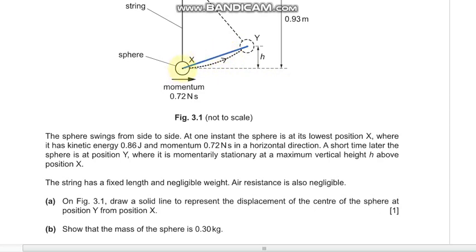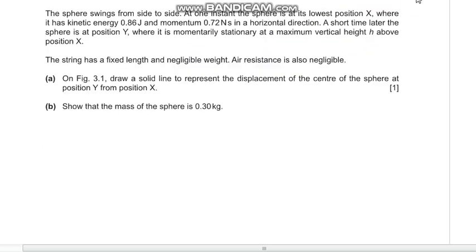Part (b) says show that the mass of the sphere is 0.3 kg. We are given the kinetic energy which is ½mv² equals 0.86 joules, and we are also given the momentum which is mv = 0.72.